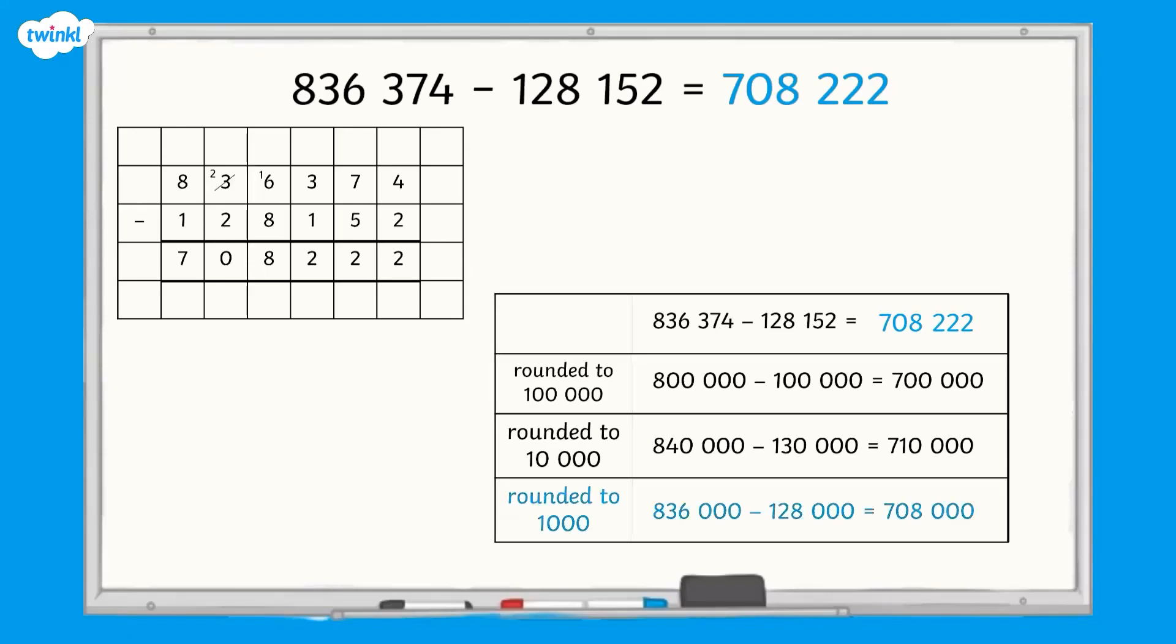In this example, rounding to the nearest multiple of 1,000 was the closest to the actual answer, but it is easier to mentally calculate 840,000 subtract 130,000 than 836,000 subtract 128,000. So rounding to the nearest multiple of 10,000 might have been better.